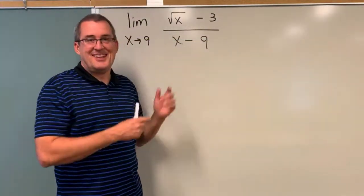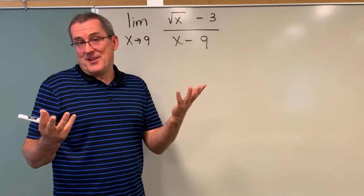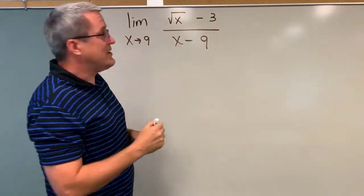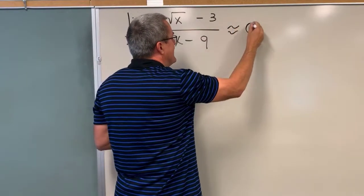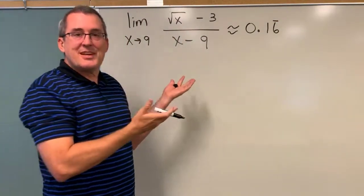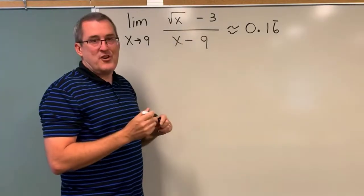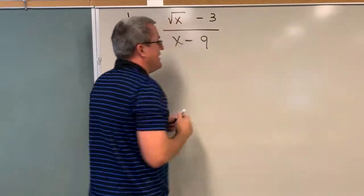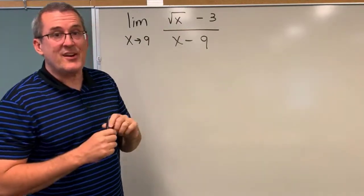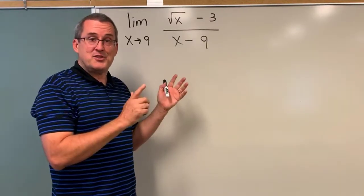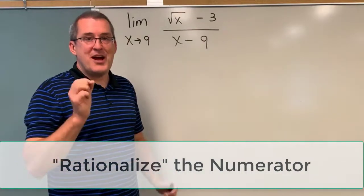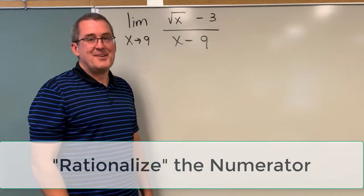In exploring this function using a graph and a table, we've discovered that as x gets closer and closer to 9, the function seems to want to output a quantity closer to approximately 0.16, and it appears that 6 repeats. Let's look at this from an algebraic point of view. This involves an interesting idea that may be new to you: we have a radical in our numerator, and a useful algebraic approach here is to rationalize the numerator. You may have rationalized a denominator in a previous math class, but have you ever rationalized a numerator? Well, we're going to do it now.